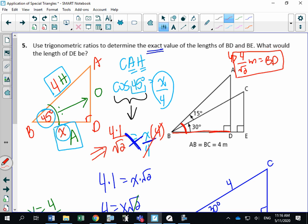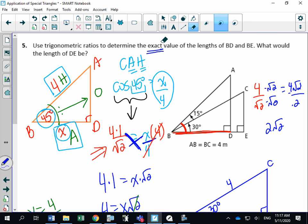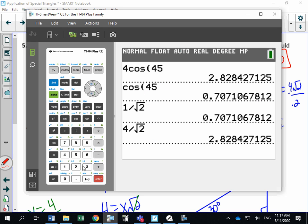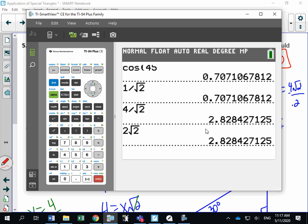That's what BD is equal to. So this distance here is 4 over root 2 meters. Oh, I just sort of realized, normally we rationalize the denominator. So let's actually quickly do that. 4 over root 2. That would be 4 root 2 over 2. 4 divided by 2 simplifies to 2 root 2. So I'm actually going to fix that. Because, remember, we always give our answer with a rationalized denominator. So BD is equal to 2 root 2.